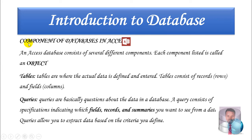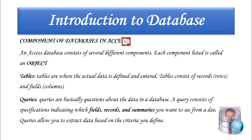Next, we are going to see what are the components of a database. We are going to use Access. In Access, a database consists of several different components. Each component listed is called an object. The first one is a table — where the actual data is defined and entered. We are going to store all information in the form of a table. A table consists of records, that is rows, and fields, that is columns.